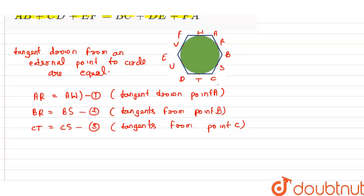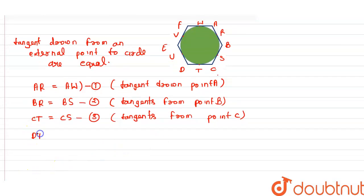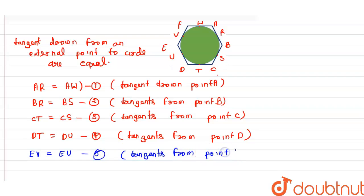And we can also write DT equals DU. Let's suppose this is equation 4. Then EV equals EU, let's suppose this is equation 5. And FV equals FW, let's suppose this is equation 6.